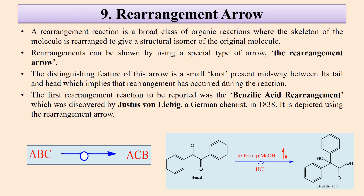Then there is the rearrangement arrow. These are reactions in which one atom or a group of atoms is shifted from one position to another — either within one molecule (intramolecular) or between two different molecules (intermolecular). The rearrangement is shown by a special arrow that has a small knot present midway between its tail and head, implying that rearrangement has occurred in the reaction. The first ever rearrangement reaction to be reported was the benzil-benzilic acid rearrangement. Also shown here are reflex arrows for that reaction.